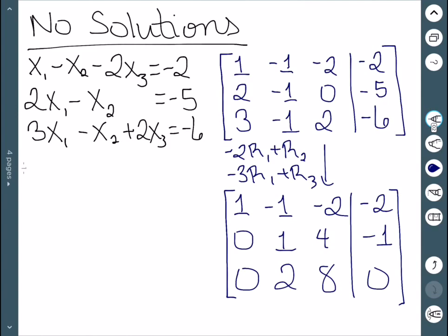We can see that negative 2 times 1 plus 2 is 0. Negative 2 times negative 1 minus 1 is 1. Negative 2 times negative 2 plus 0 is 4. And negative 2 times negative 2 minus 5 is negative 1. So that gives us the second row.